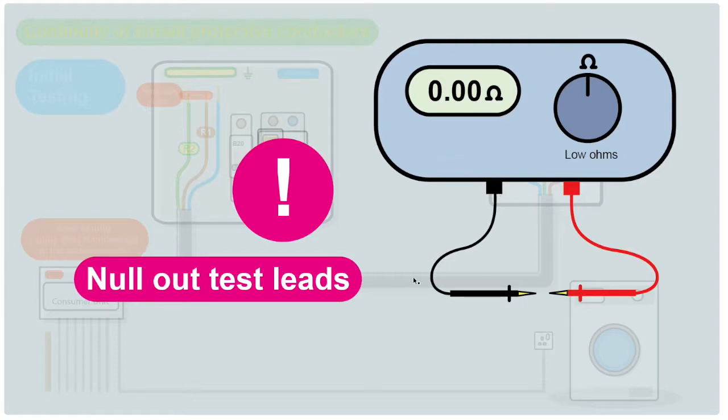When you put the probes together and press a button it'll null out the reading. You'll get a reading of 0.00 on your display, and any reading that you do get when you're doing your testing is purely the circuit you are testing and the leads are not adding to that resistance.